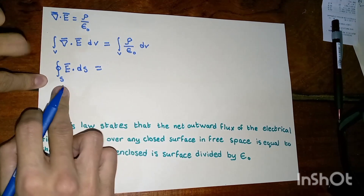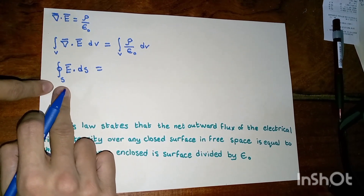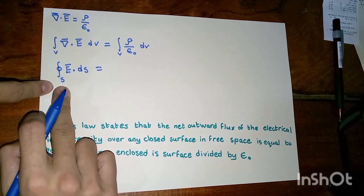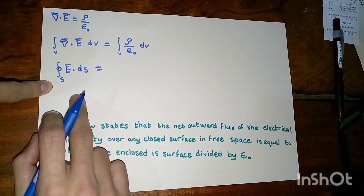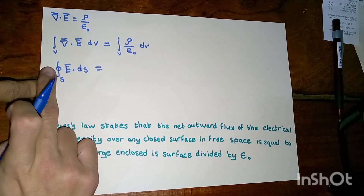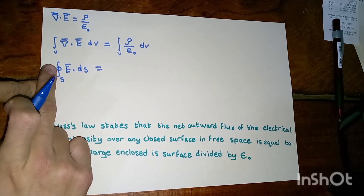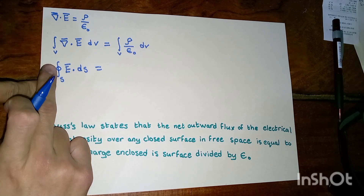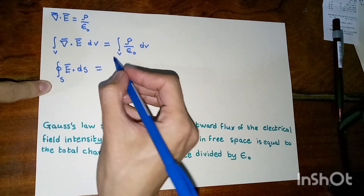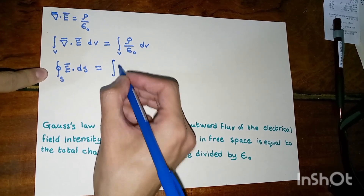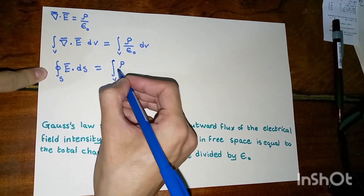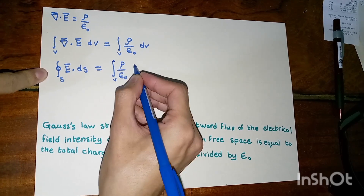The surface integral of the electrical field intensity is the net outward flux over some bounded surface, where the circle on the integral sign denotes that the surface we are integrating around is a closed surface, and the right-hand side becomes the integral of rho over epsilon dV.